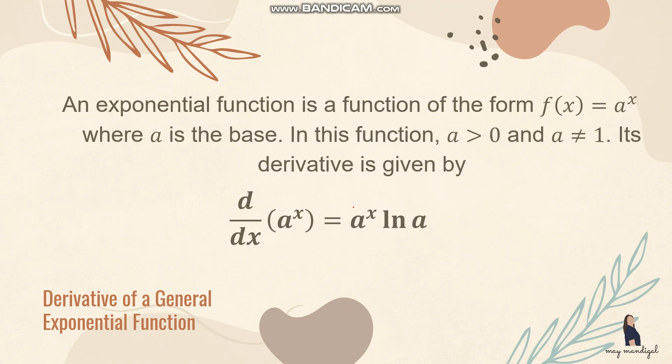For the derivative of a general exponential function, where the base is not the natural number e, the function takes the form f(x) = a raised to x, where a is greater than 0 and a is not equal to 1. Its derivative is given by d/dx of a raised to x equals a raised to x times ln of a. This is true if the exponent is x only. So all you have to do is follow the form: a raised to x times ln of a.